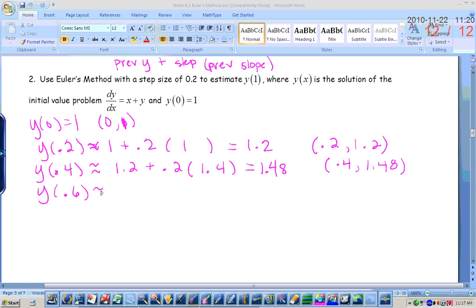Alright, so y of 0.6 will be approximately the previous y value was 1.48 plus the step size, and then the slope at 0.4, 1.48 is 1.88. Okay, y of 0.6 is actually 1.856.